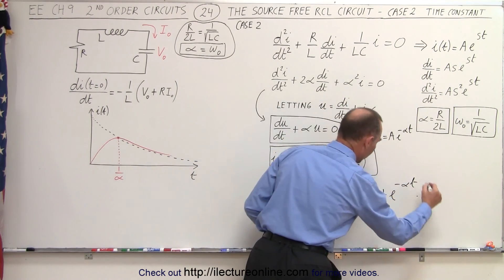So we take the first, this is equal to the first t times the derivative of the second which is minus alpha times e to the minus alpha t plus the second which is plus e to the minus alpha t multiplied times the derivative of the first which is times 1.